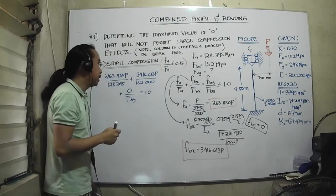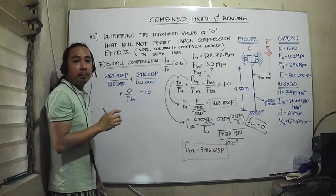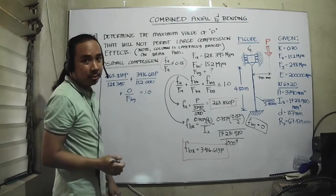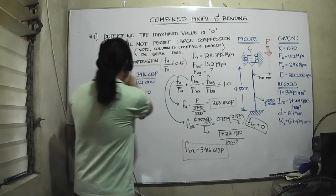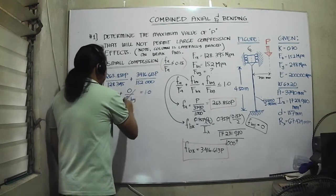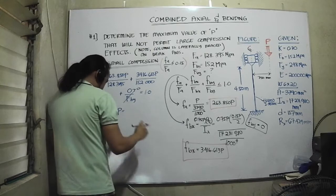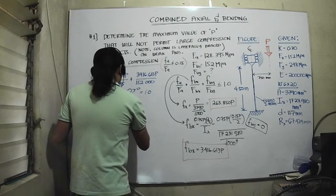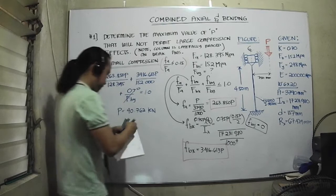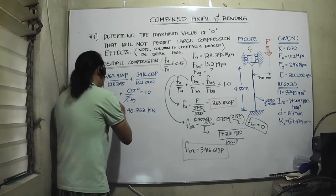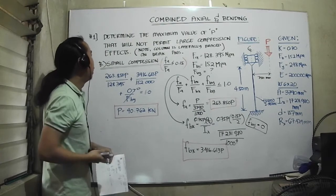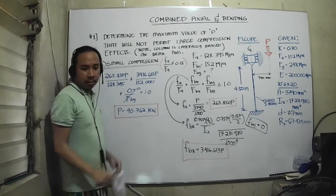Since we want the maximum value of P, we set the interaction equation equal to 1.0 — this is an optimization where we find the largest P that just satisfies the non-large compression criterion. Solving for P gives P = 40.762 kilonewtons. This is our value of P based on the non-large compression effect criterion.